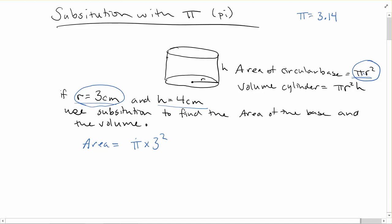Remember, there's a little invisible times sign there. Because order doesn't matter in multiplication, 3² is 9. I'm just going to leave it with pi and say 9π.